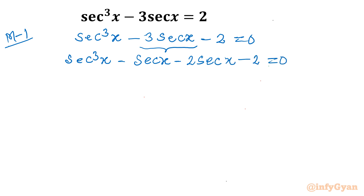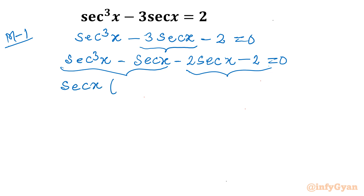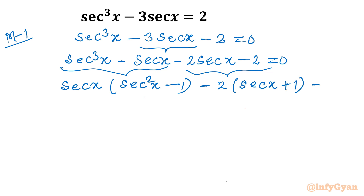From the first two terms I will take sec x common, and from the last two terms I will take −2 common. Taking sec x common gives sec x(sec²x − 1). Taking −2 common from the remaining terms gives −2(sec x + 1). The right-hand side is still 0.